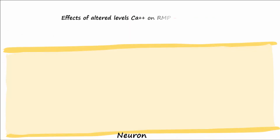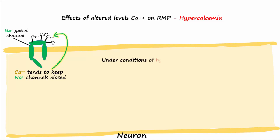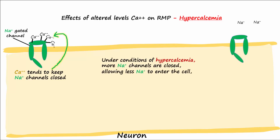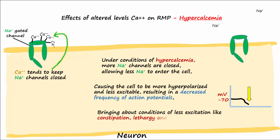Hypercalcemia has the opposite effect on the resting membrane potential of neurons. Calcium tends to keep sodium channels closed. Under conditions of hypercalcemia, more sodium channels are closed, preventing sodium from entering the cell, causing the cell to be more hyperpolarized and less excitable, decreasing the frequency of action potentials, and bringing about conditions of less excitation like constipation, lethargy, and muscle weakness.